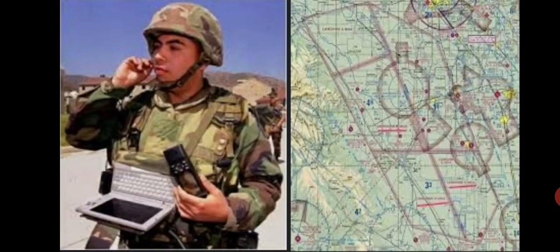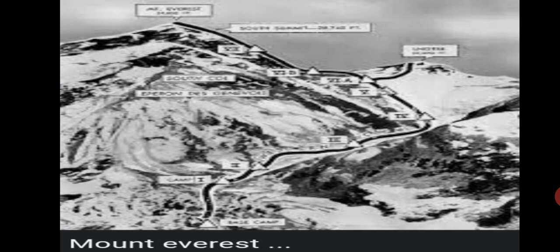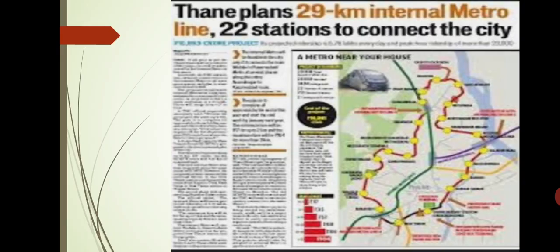Physical maps can be used in military operations, tourism, drawing up mountaineering routes, in making regional development plans, etc. You can see here a newspaper article shows how the Thane district is planning a 29 kilometer internal metro line and 22 stations to connect the city.